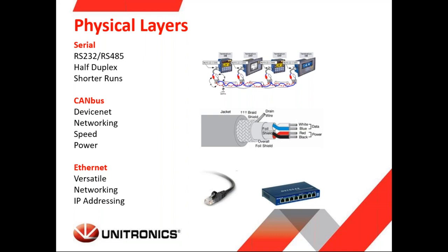With RS-485 you could have one-to-one communication, but you need to account for termination. If you have more than one device on a network, the end devices need to have a terminating resistor, which allows the line to know that the message is ending at that particular point. If you do not set termination, you could introduce noise issues into the system.